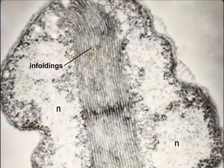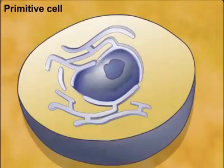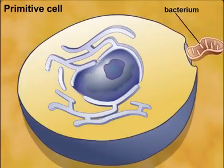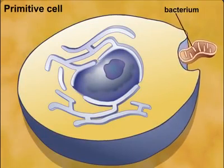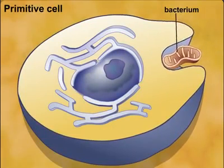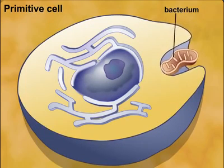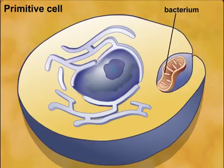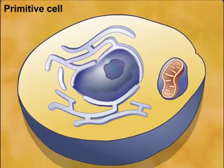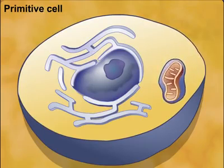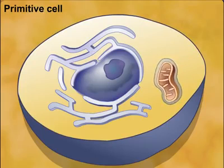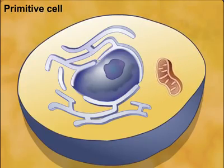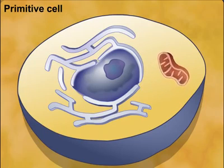The theory of endosymbiosis proposes that a critical stage in the evolution of eukaryotic cells involved endosymbiotic relationships with prokaryotic organisms. Microorganisms that live within other cells and perform specific functions for their host cells are called endosymbionts.